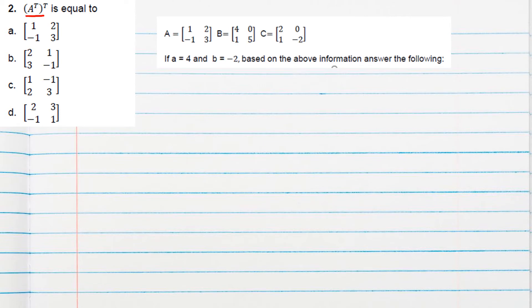Question number two is (A^T)^T equals what? No need to find transpose and then its transpose again. By property of transpose, we know the transpose of a transpose of a matrix will be the same matrix. So it will be A only, that means [1 2; -1 3]. Option A will be correct.